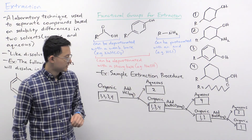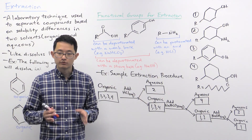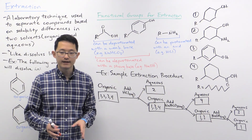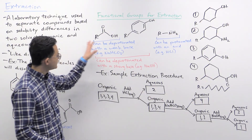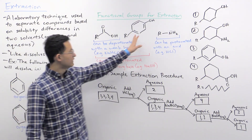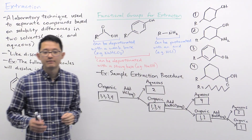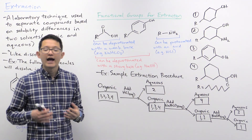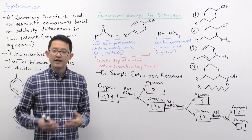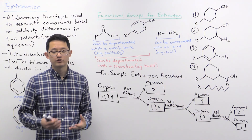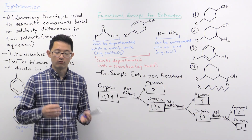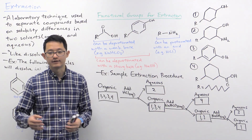So this is how extraction works. What's most important to keep in mind for the MCAT is these three functional groups — carboxylic acids, phenols, and amines — and how we can protonate and deprotonate these groups to introduce full charges that will change their solubilities in organic and aqueous solvents.